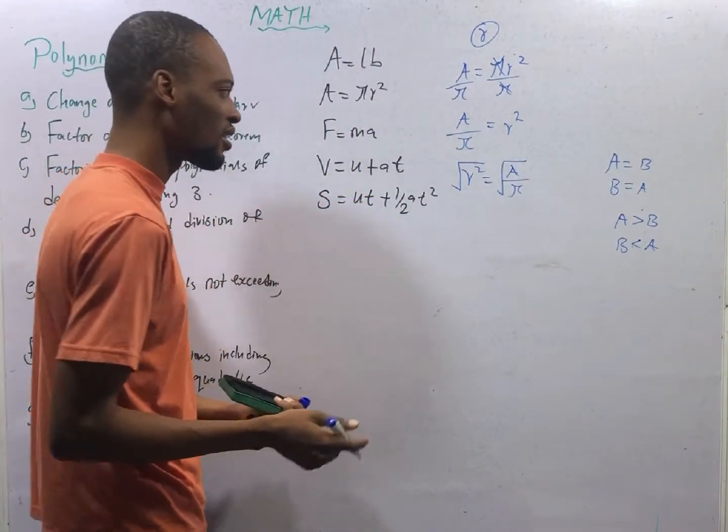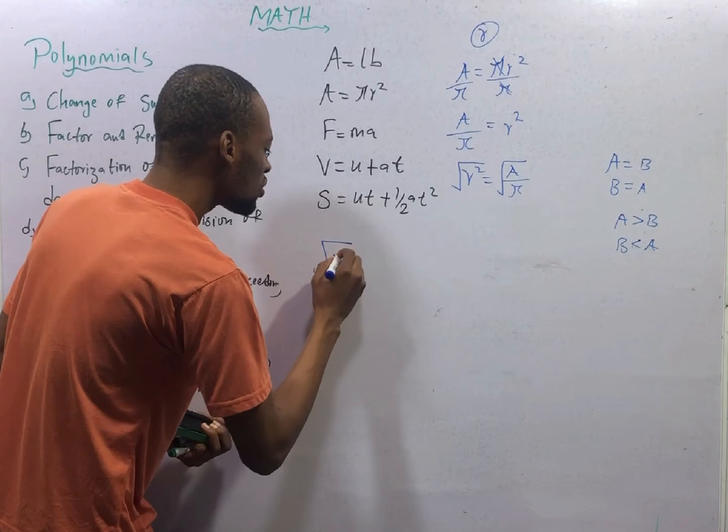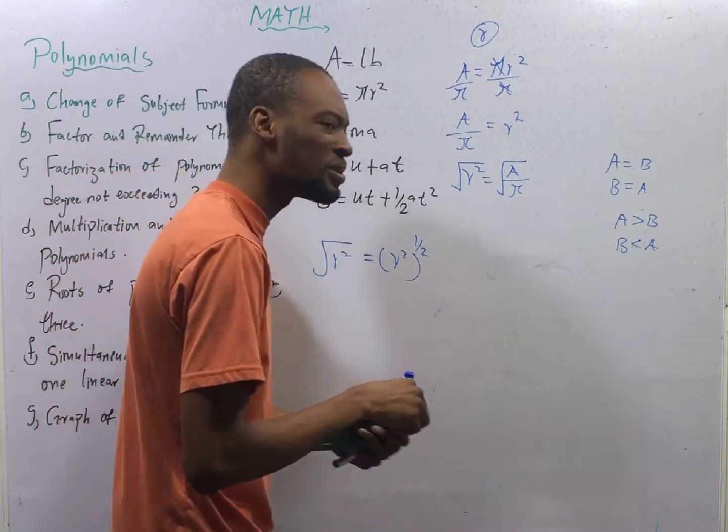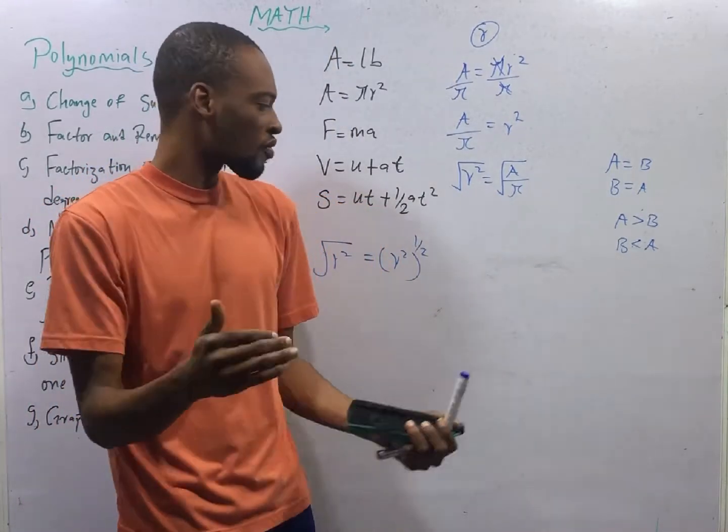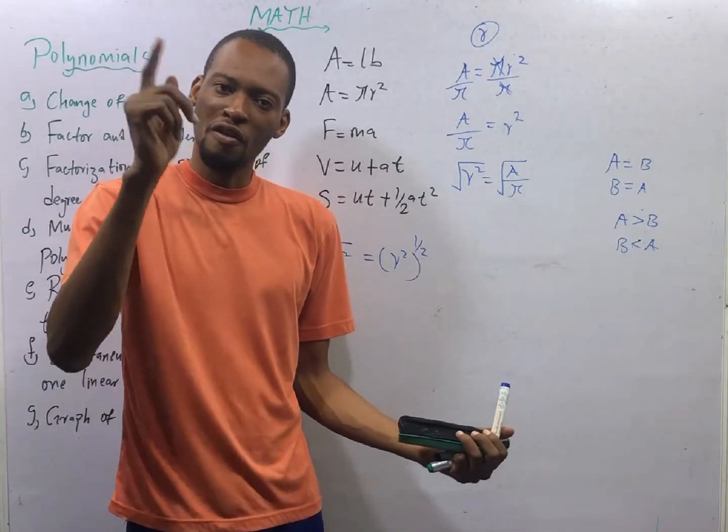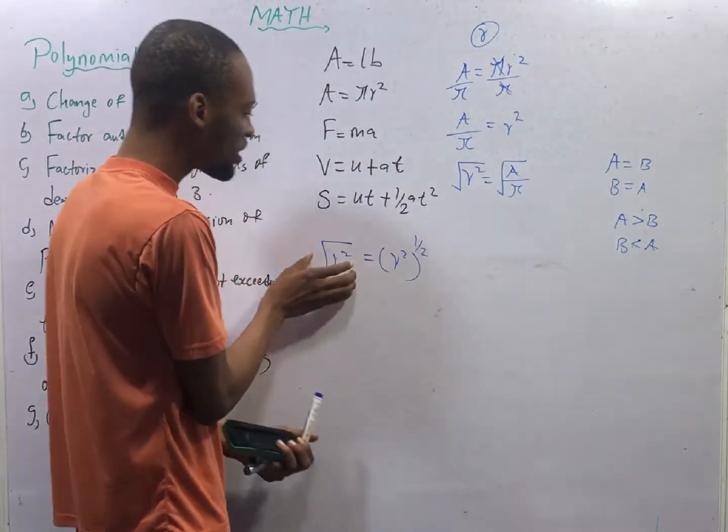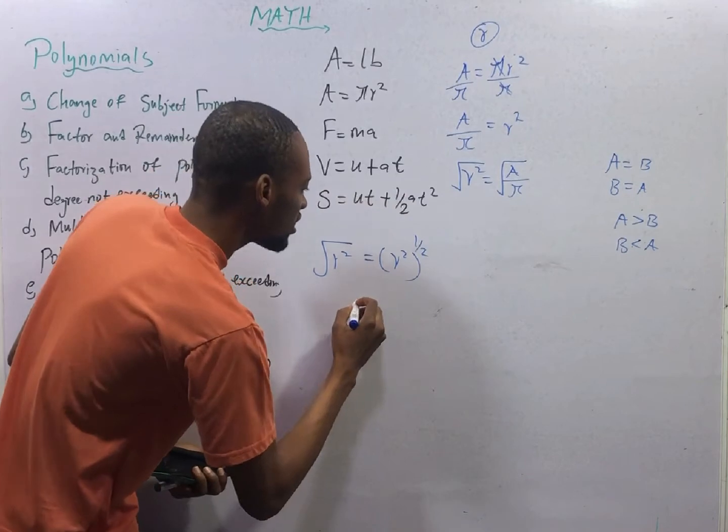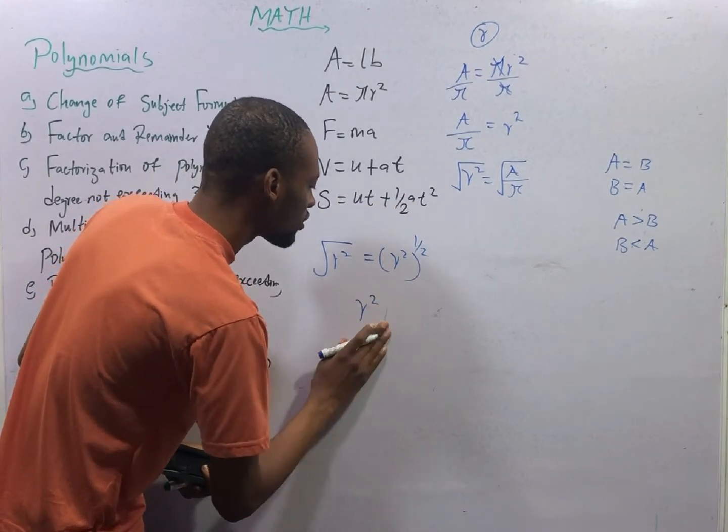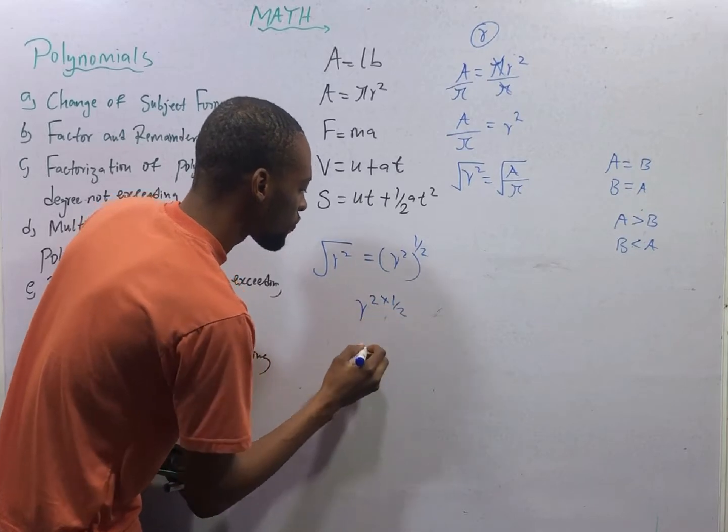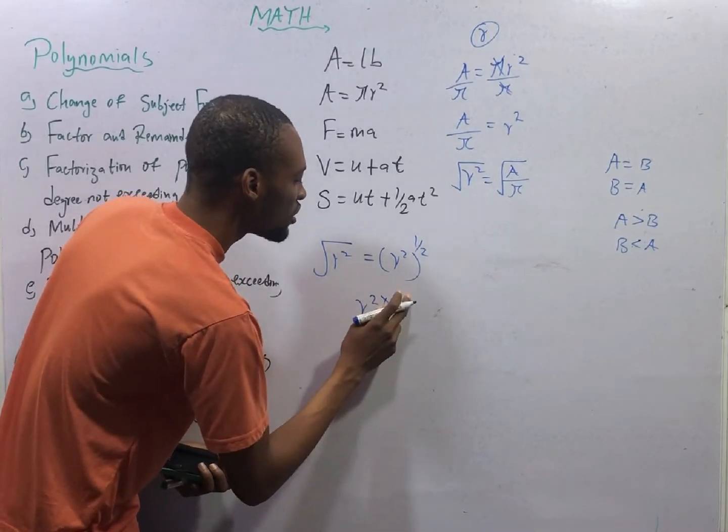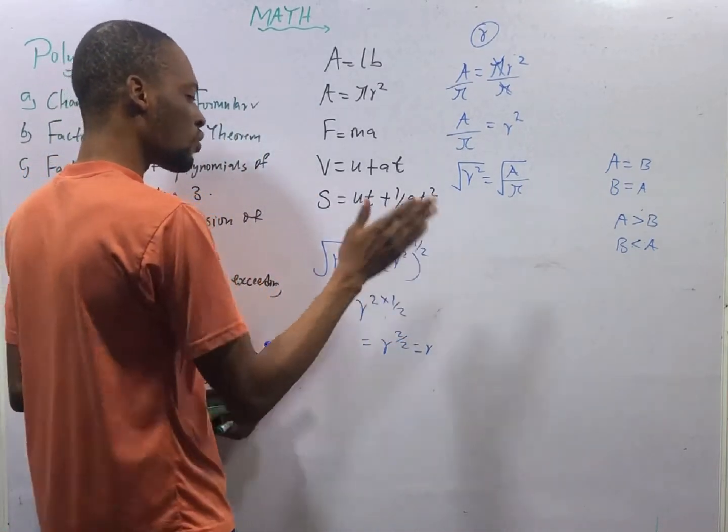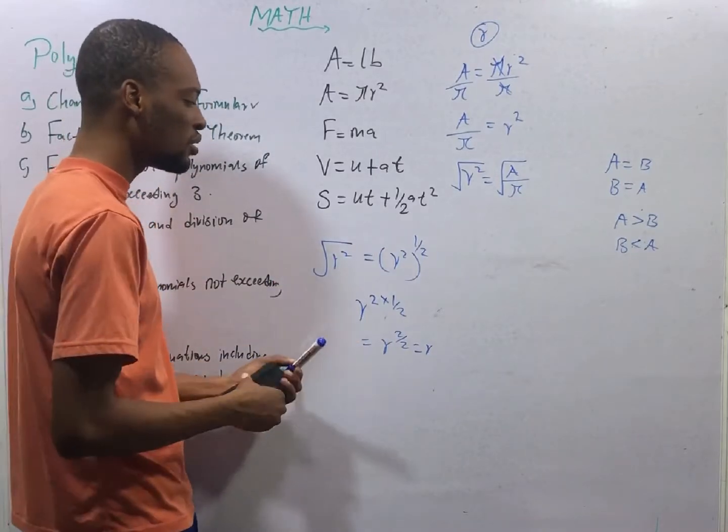Do you know why we do that? If I have square root of R squared, this is the same thing as R squared raised to the power of 1 over 2. Square root means raised to the power of 1 over 2. Cube root means raised to the power of 1 over 3. This is R squared times 1 over 2. This is R, 2 times 1 is 2, 2 over 2, which equals R. You will see that square and square root will be neutralized, leaving the single value behind.